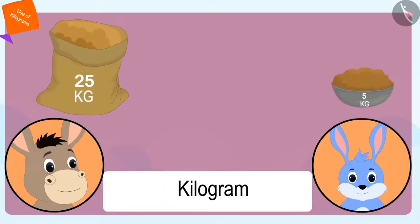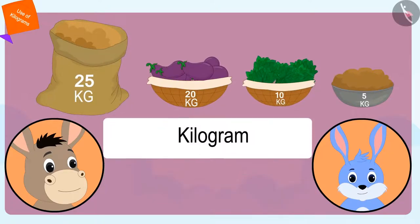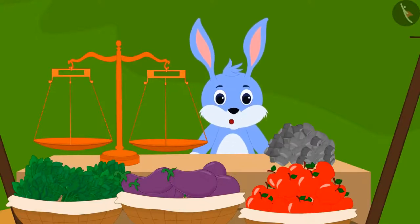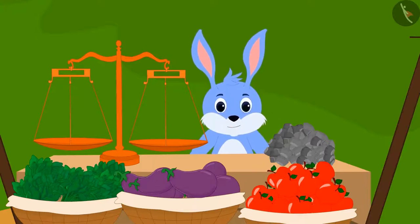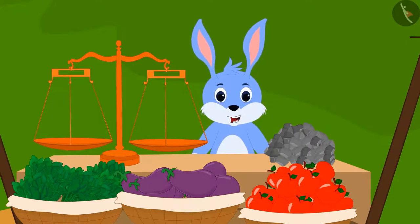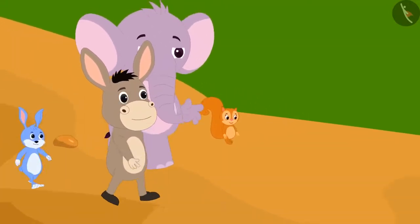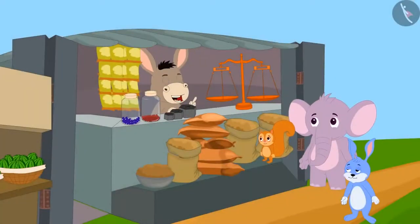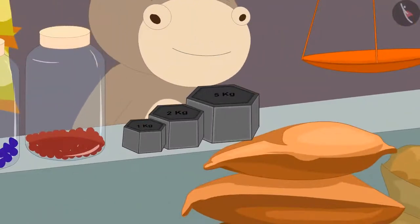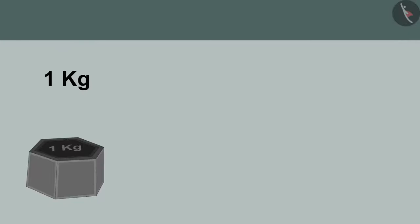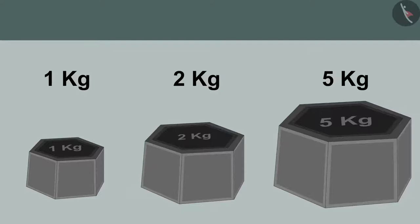A kilogram is a unit of measuring weight that always remains the same. Bhola explained that to measure the weight of objects, we need standard weights. He took Banni, Appu, and Chanda to his shop and showed them weights used for this purpose. He said, 'We can measure the weights of objects in kilos using these weights. This weight is 1 kg, this is 2 kg, and this is 5 kg.'